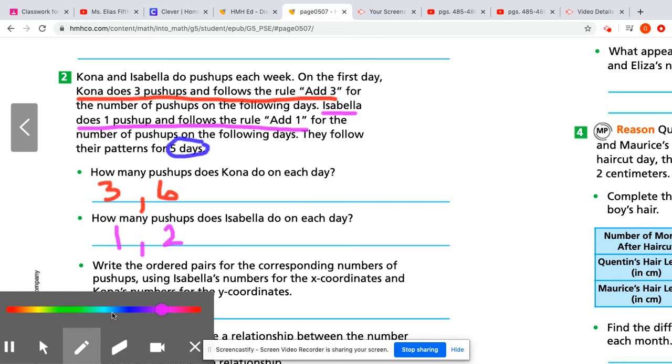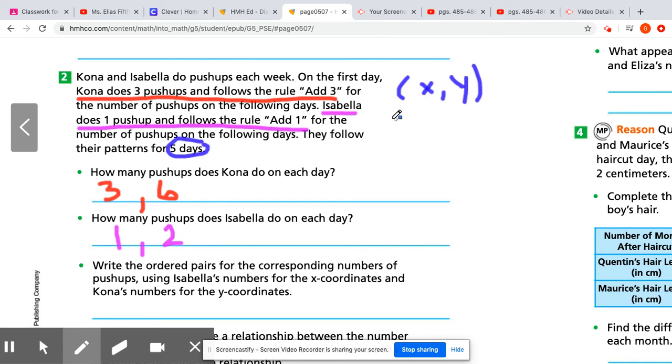Remember for the next part, they want us to do our ordered pairs. And like I just mentioned, XY is our ordered pair patterns. X comes first, then Y, just like the alphabet. A, B, C, D, E, F, G, blah, blah, blah, X, Y, Z.